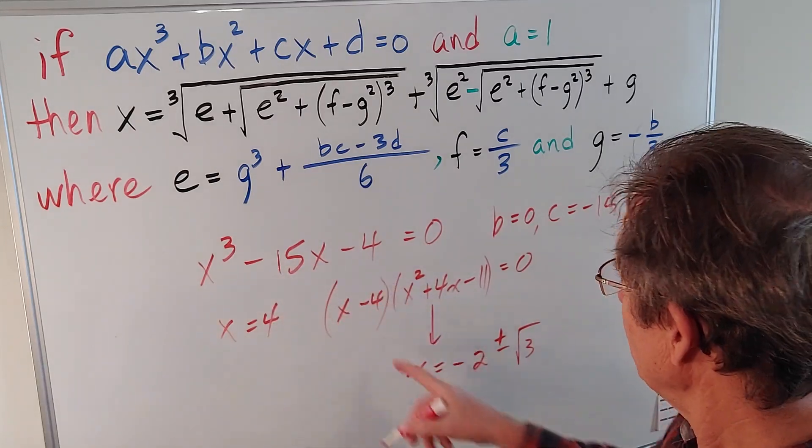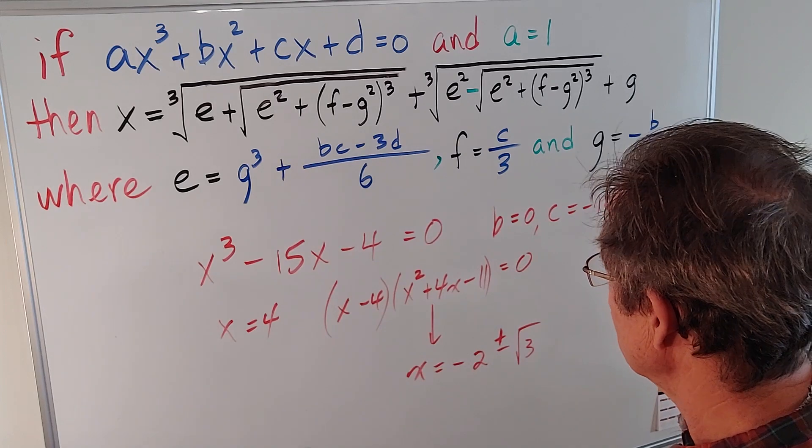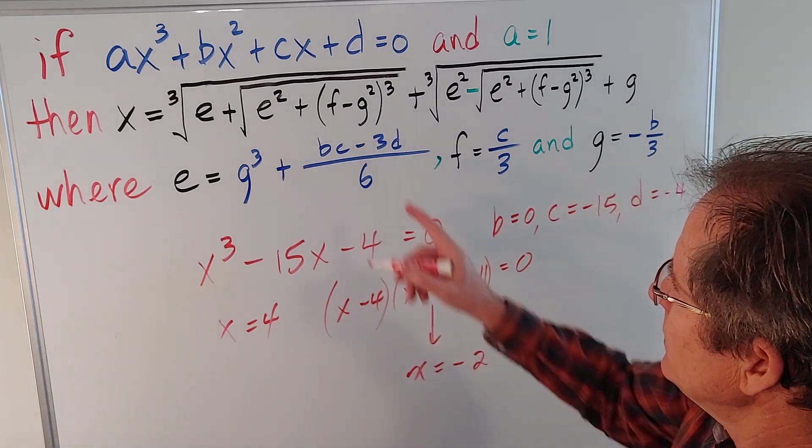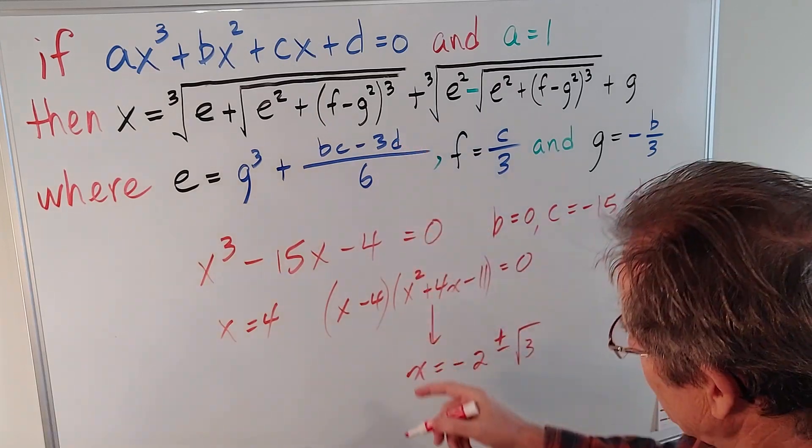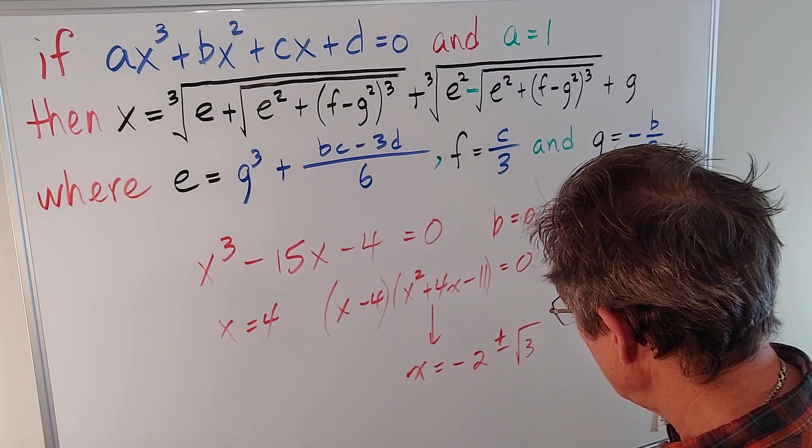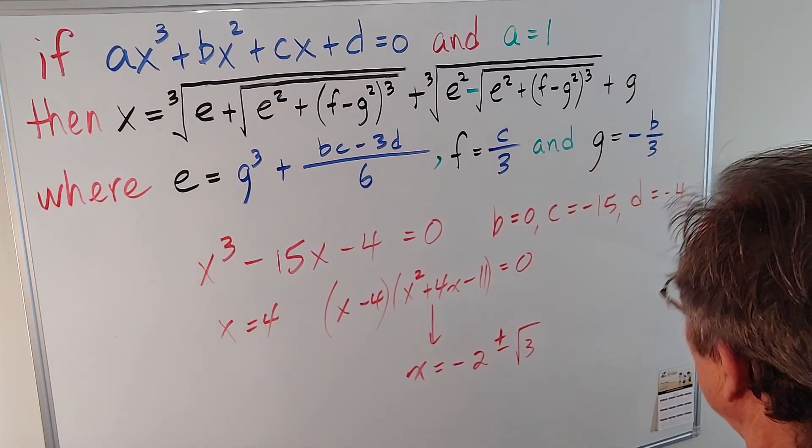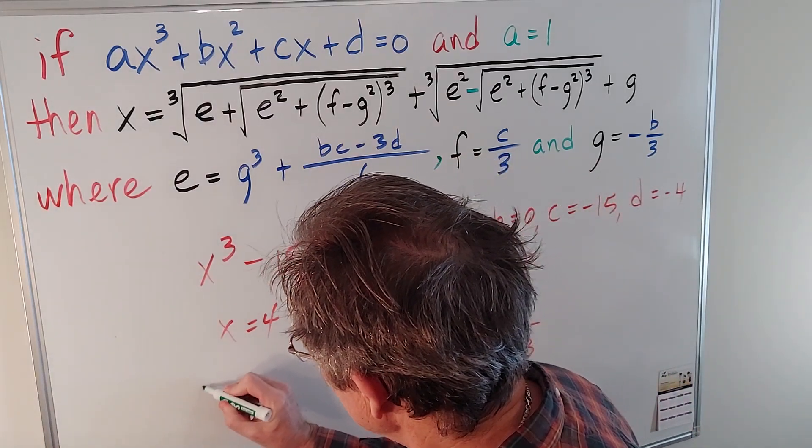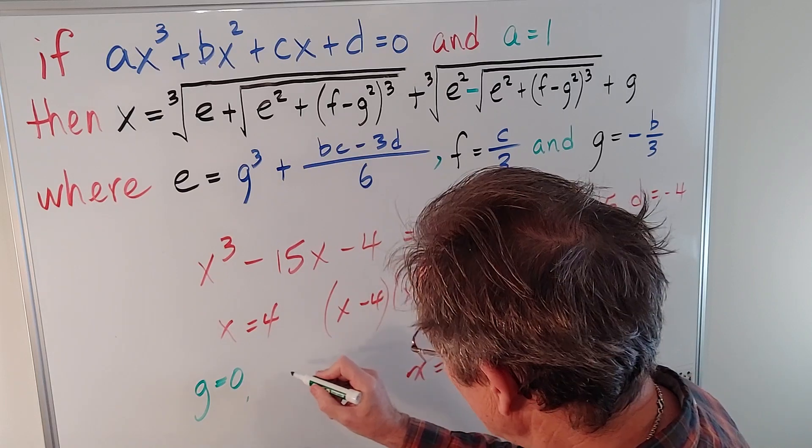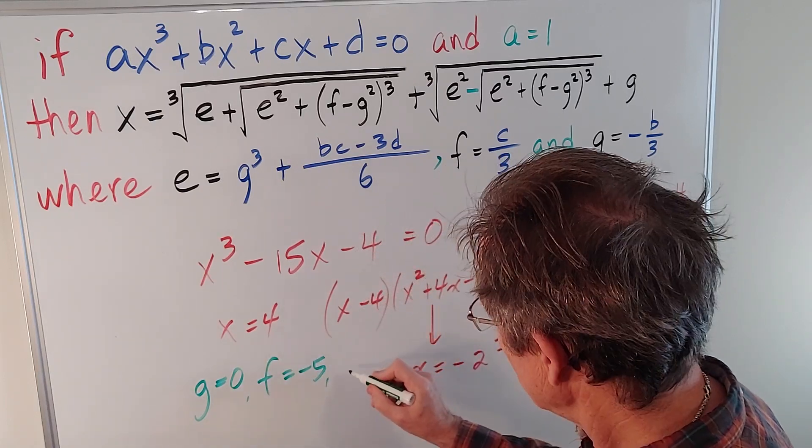And you can check that by plugging, first of all, 4 into here, and then each one of those separately into here, and you'll find out that it does give you 0. Or you can use this formula. If you use that formula, you're going to get g equals 0, f equals negative 5, and e equals 2.